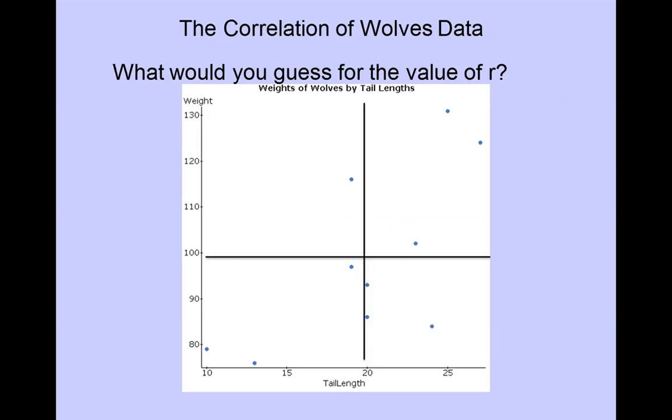Suppose for the wolf data we made a plot of basically where the x bar and y bar for the data is. That sort of creates the vertical and horizontal lines we have drawn in. What would you guess for the value of r?